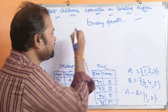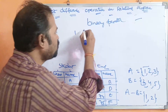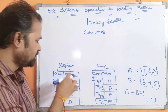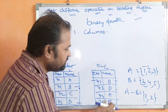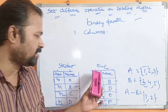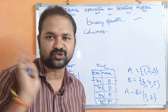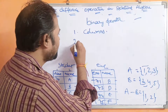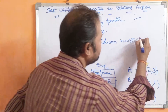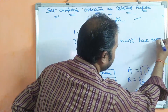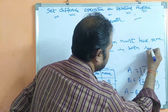The first condition is that both relations must have the same number of columns. For example, the student relation has two columns — roll number and name — and the employee relation also has two columns — employee number and employee name — so the first condition is satisfied. The second condition is that every column must have the same domain in both relations.